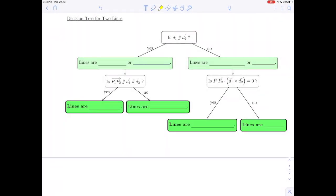In the previous video, we used a procedure for deciding the relationship between two lines in R3, and this decision tree for two lines will capture in flowchart form the procedure that we used.